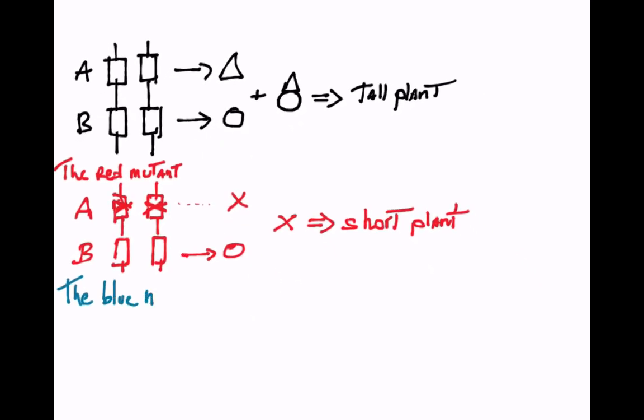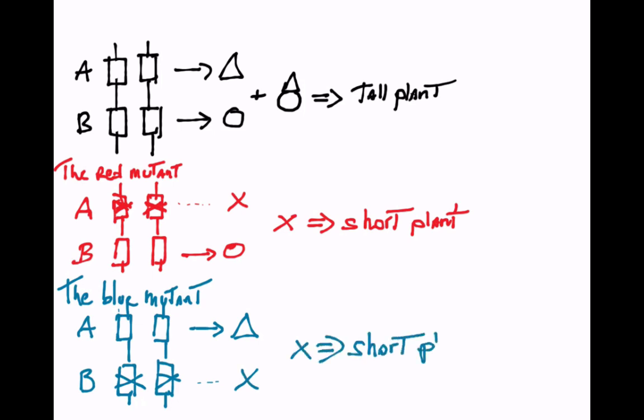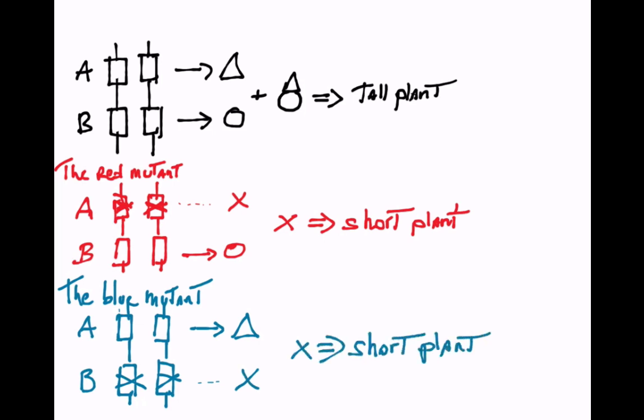Another mutant, the blue mutant, has a lesion in the B gene and as a result it cannot make the ball protein. The protein complex is not made and the result is a short plant.